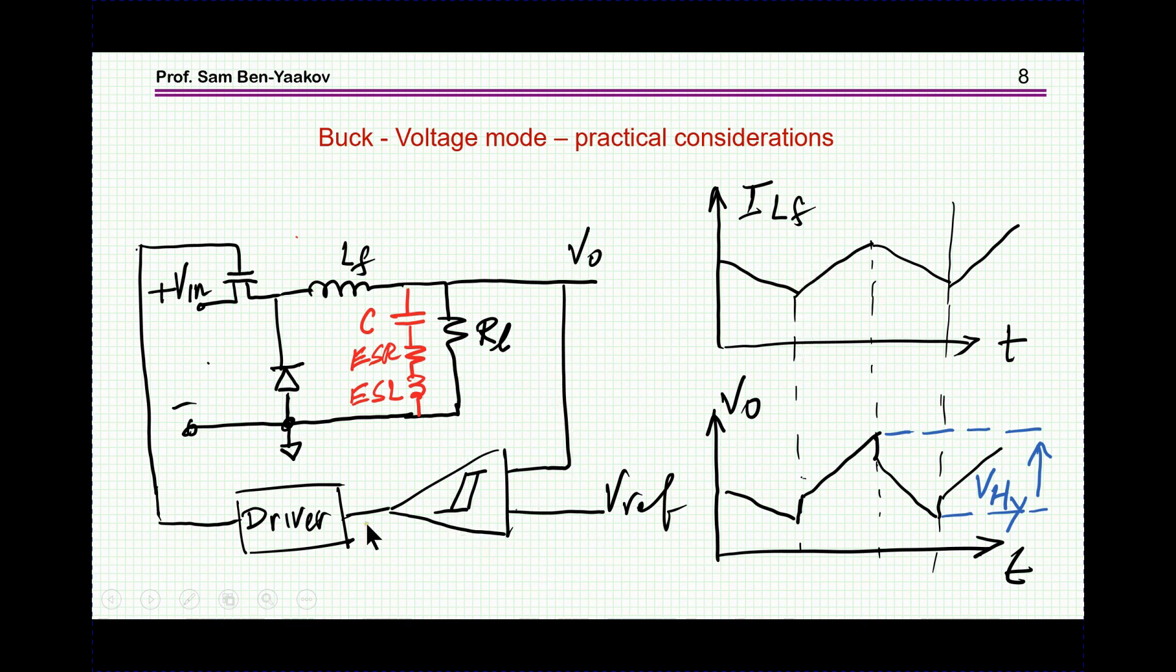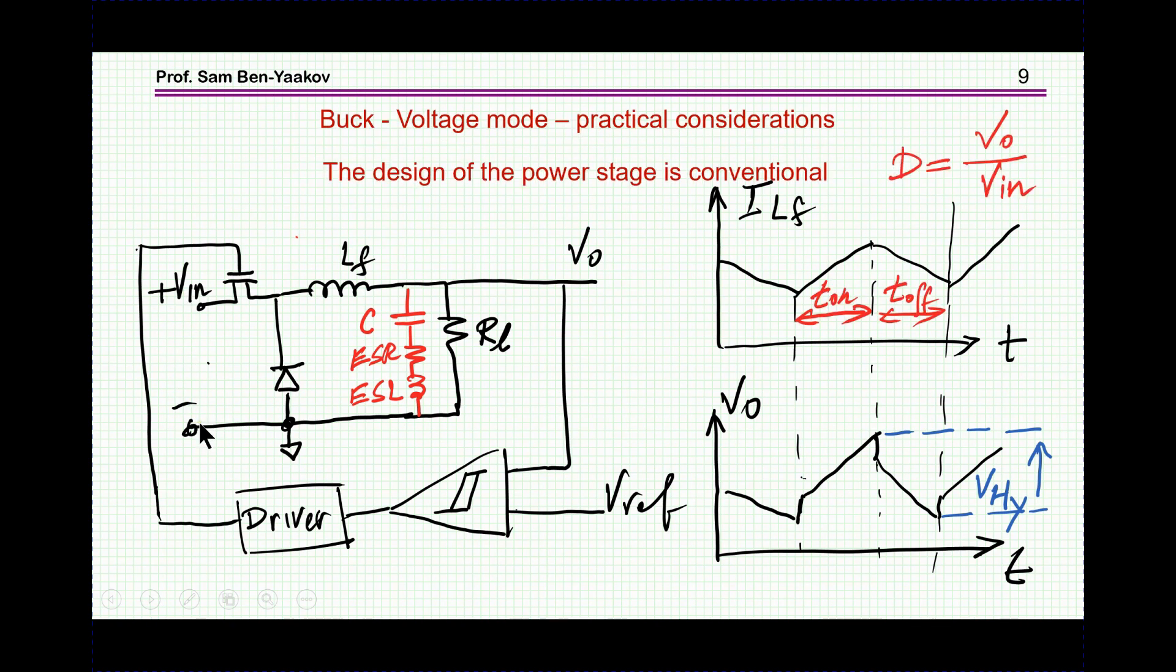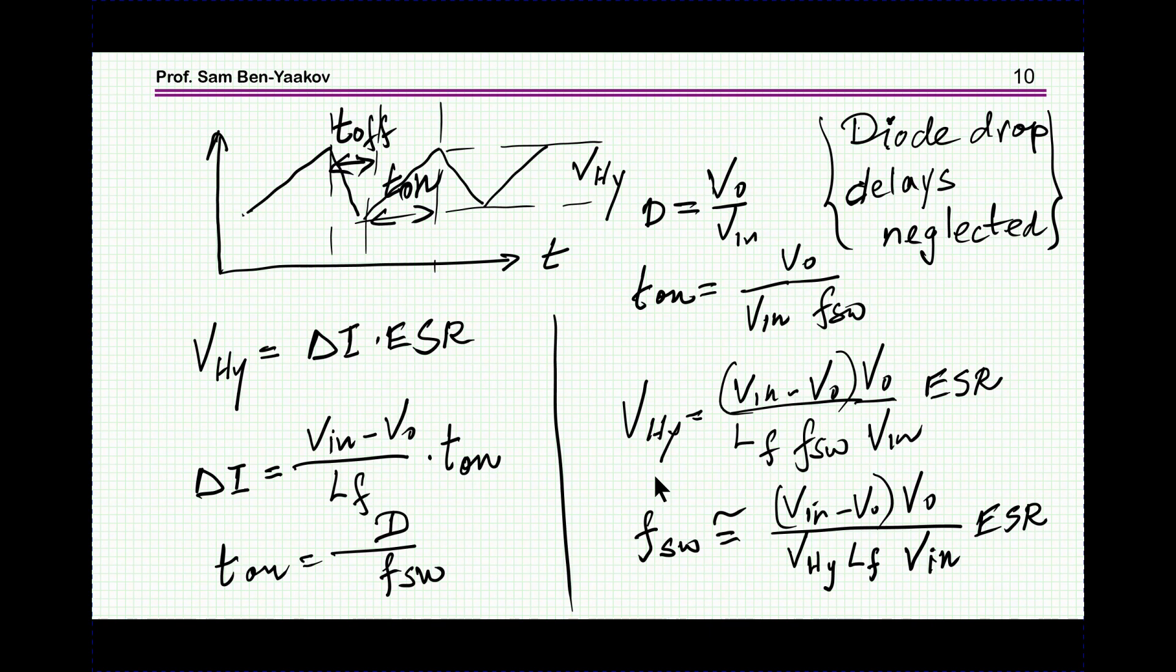Now as I've already said, the stage itself is a regular buck and you design it according to conventional design rules. The inductance value said to stay at CCM, etc. And of course the duty cycle is V_out over V_in, and like in any buck configuration this is of course for a CCM operation.